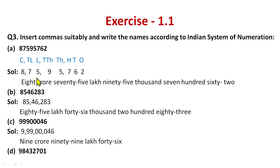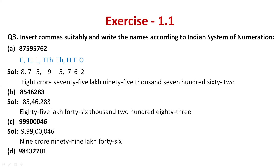You just need to write the period name in place of the comma, and you'll write the correct word form. Part (b): place commas — three digits then two digits — and write: 85 lakh 46,283. Part (c): insert commas — three digits, two, two, two — and read: 9 crore 99 lakh 46. Now do part (d) in the comment section; pause the video and do it now.